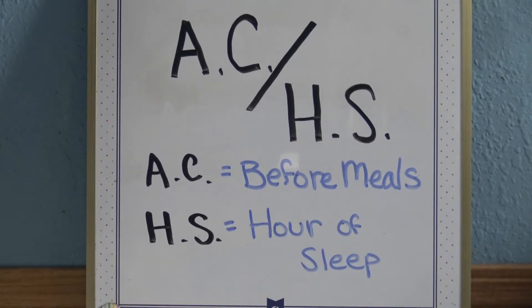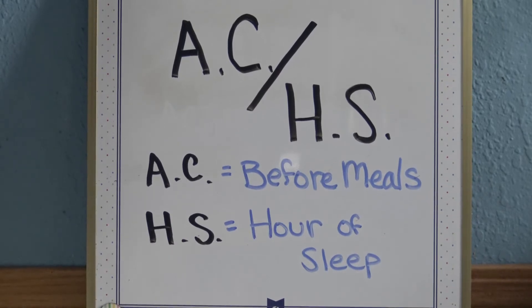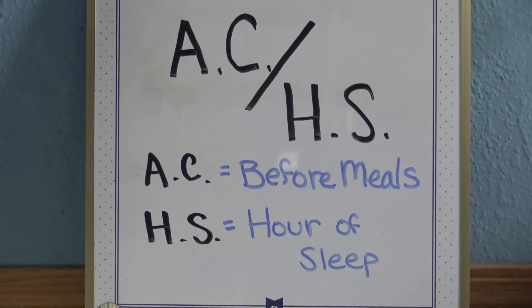AC and HS — AC is before meals, and HS is hour of sleep. So before food and at bedtime. AC is before meals, HS is hour of sleep.